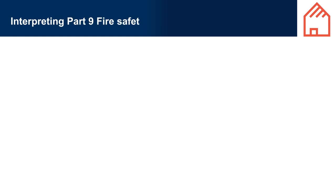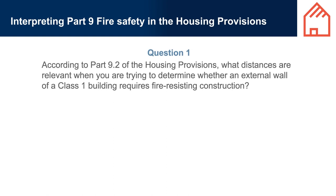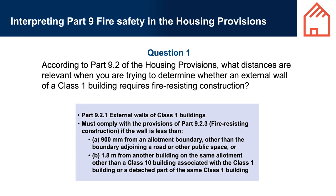Interpreting Part 9 Fire Safety in the Housing Provisions. Question 1: According to Part 9.2, what distances are relevant when determining whether an external wall of a Class 1 building requires fire-resisting construction? Answer: Part 9.2.1 states external walls of Class 1 buildings must comply with Part 9.2.3 Fire-Resisting Construction if the wall is less than (a) 900 millimetres from an allotment boundary other than one adjoining a road or public space, or (b) 1.8 metres from another building on the same allotment, other than a Class 10 building associated with the Class 1 building or a detached part of the same Class 1 building.